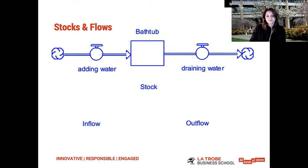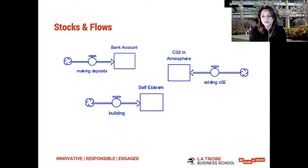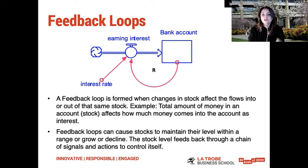Here are some other examples of stocks and flows. The bank account with a deposit is an inflow. When you talk about carbon dioxide in the atmosphere in relation to climate change, adding carbon dioxide means the stock of CO2 in the atmosphere goes up. Similarly, if you think of your self-esteem as a stock, you need to be involved in activities that help to build that self-esteem over time to increase the stock. We now turn to the concept of feedback loops. A feedback loop is formed when changes in a stock affect the flows into or out of the same stock. The total amount of money in an account affects how much money comes into the account as interest — when you have more in your bank account, you earn more interest.